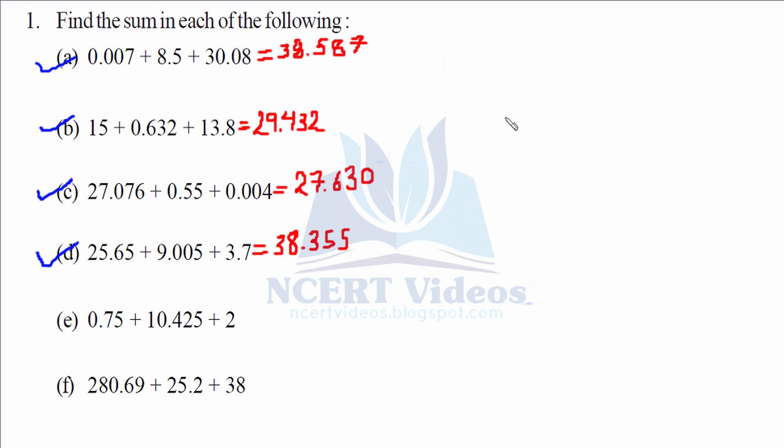Part E: 0.75, 10.425, 2.000. Now let's add them. 5, 7, 11, 3 and 1. 13.175.